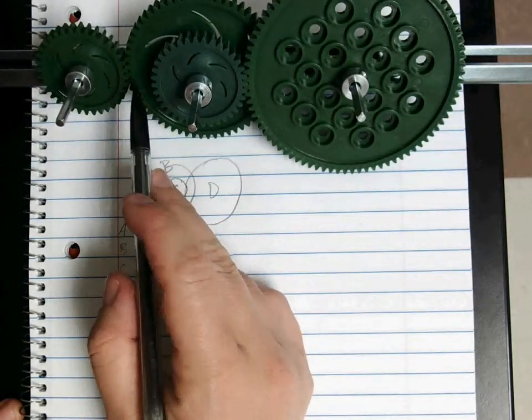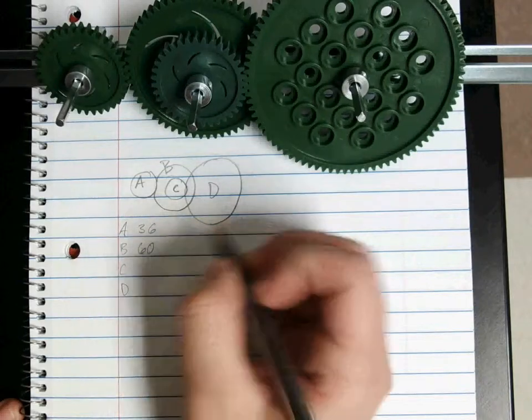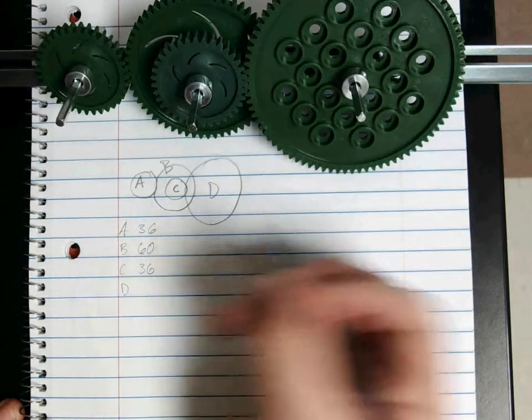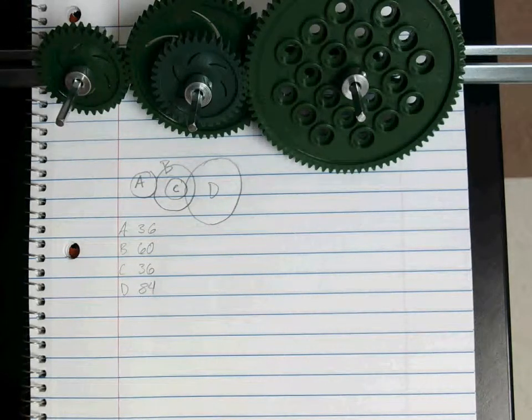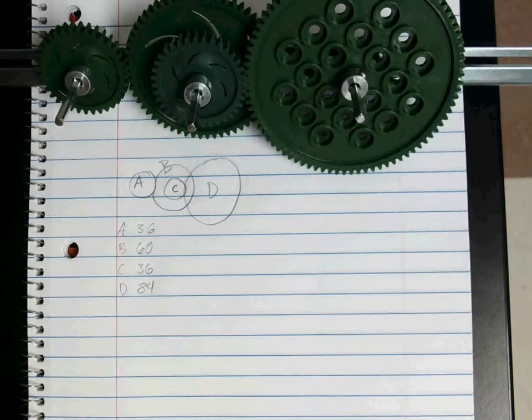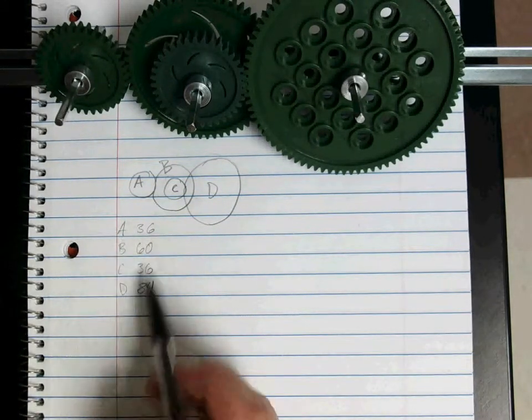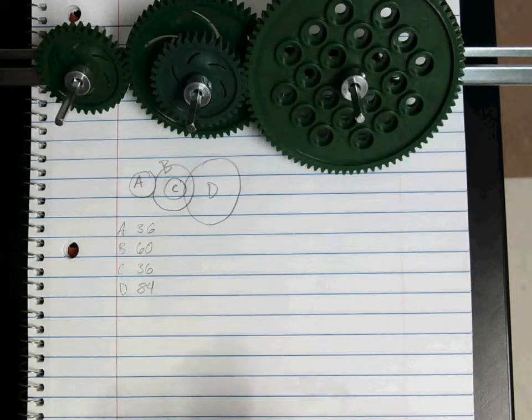Our C is 36. Our D is 84. So these are the sizes for these gears right here. Remember, you're putting in whatever you have for yours.